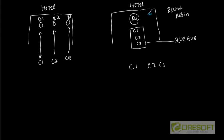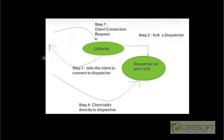If I have two receptionists, then C1 and C2 might be served by R1 and C3 may go to R2. Essentially we are going to have some sort of queue. Let's see what is the role of the listener in the case of shared server mode. When a request comes from the client to the listener, instead of creating a dedicated server, the listener is going to fork a dispatcher process.